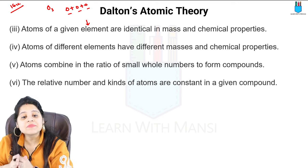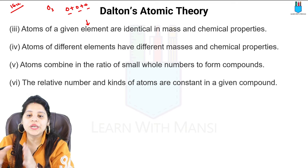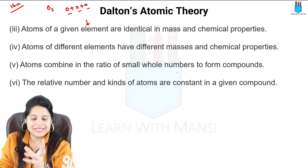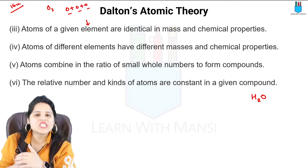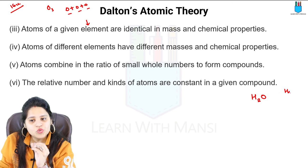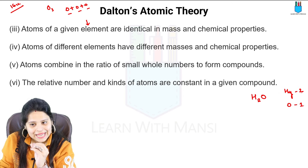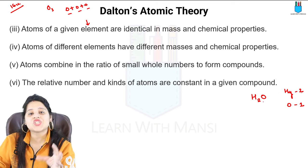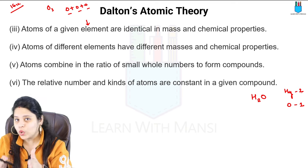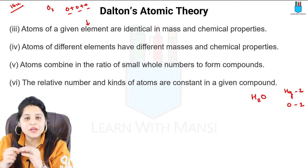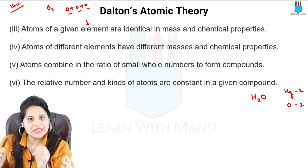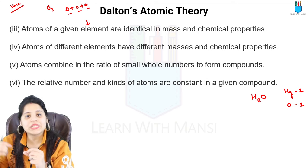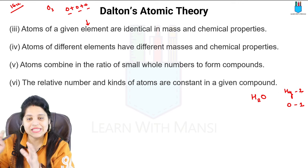Fifth point: atoms combine in the ratio of small whole numbers to form a compound. When atoms combine, they combine in whole numbers. For example, H2O — hydrogen has two atoms and oxygen has one atom. Whenever there is a combination, it is 2, 3, 4, 5, or 6 — in whole numbers. It is not possible that hydrogen is 2.5 atoms and oxygen is 1.5 atoms. It must be whole numbers: 2 hydrogen, 3 hydrogen, 4 hydrogen.